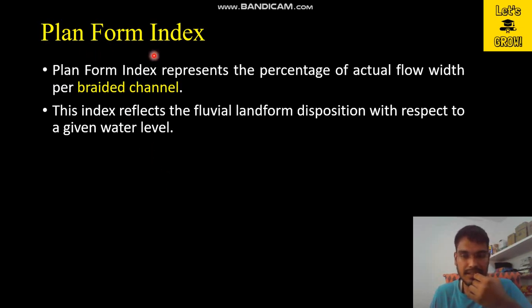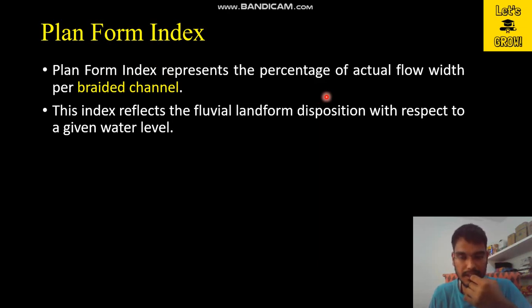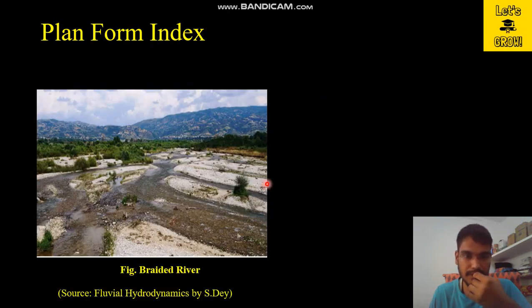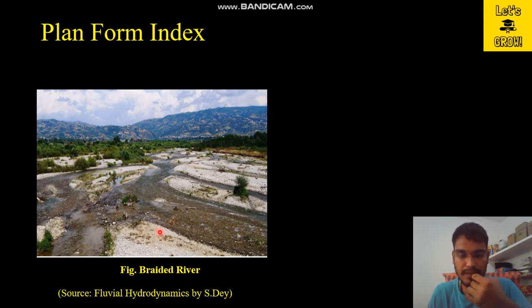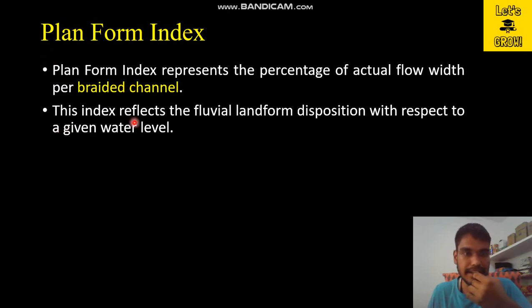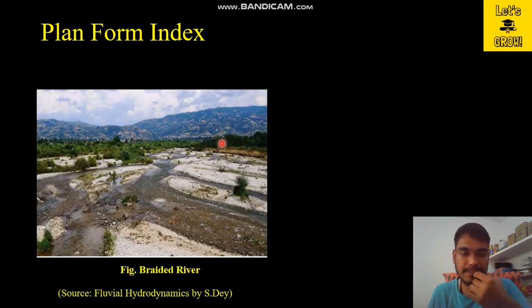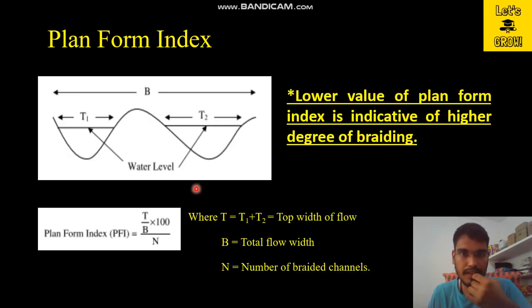Plan form index is used for braided rivers to represent what percentage of actual flow width per braided channel is actively flowing, because water does not flow through the complete width of the river — it flows in a small number of channels. This index reflects fluvial landforms with respect to a given water level, so plan form index is always given with respect to a water level: when water level is high the bars are submerged, and when water level is low the bars are exposed.